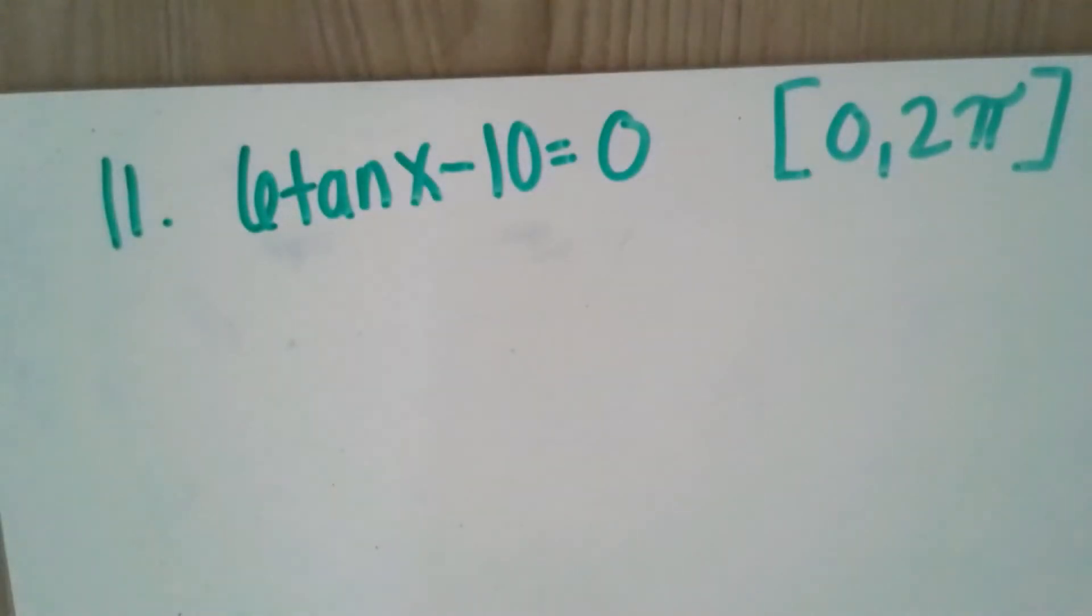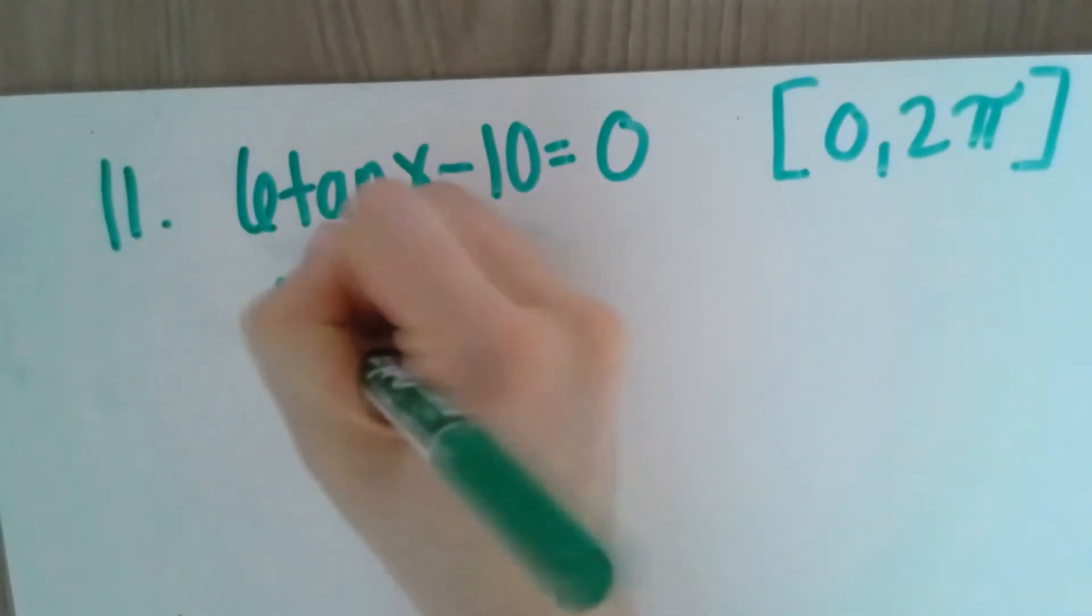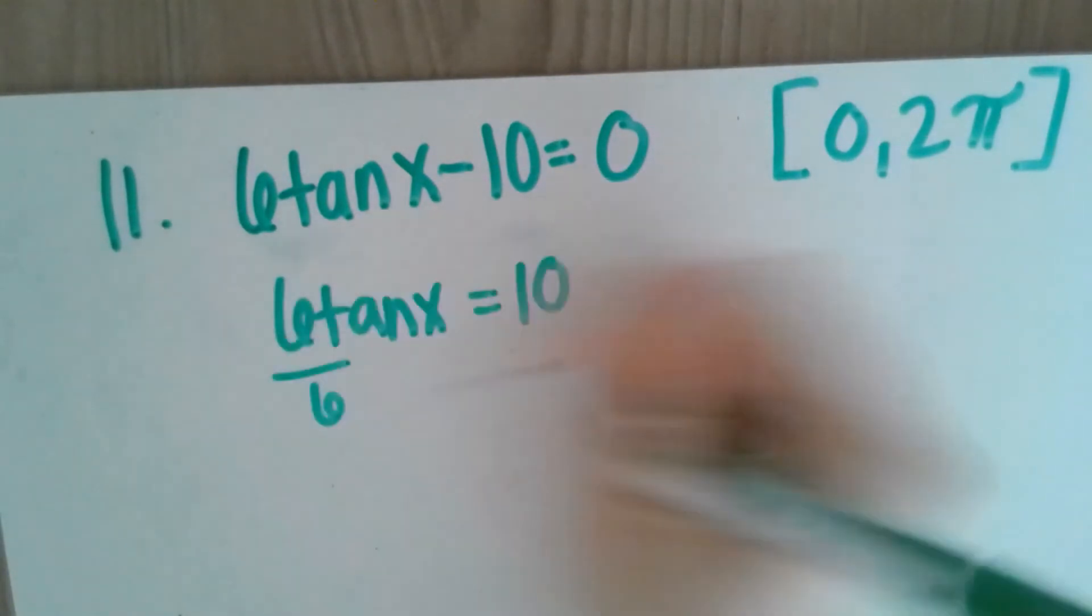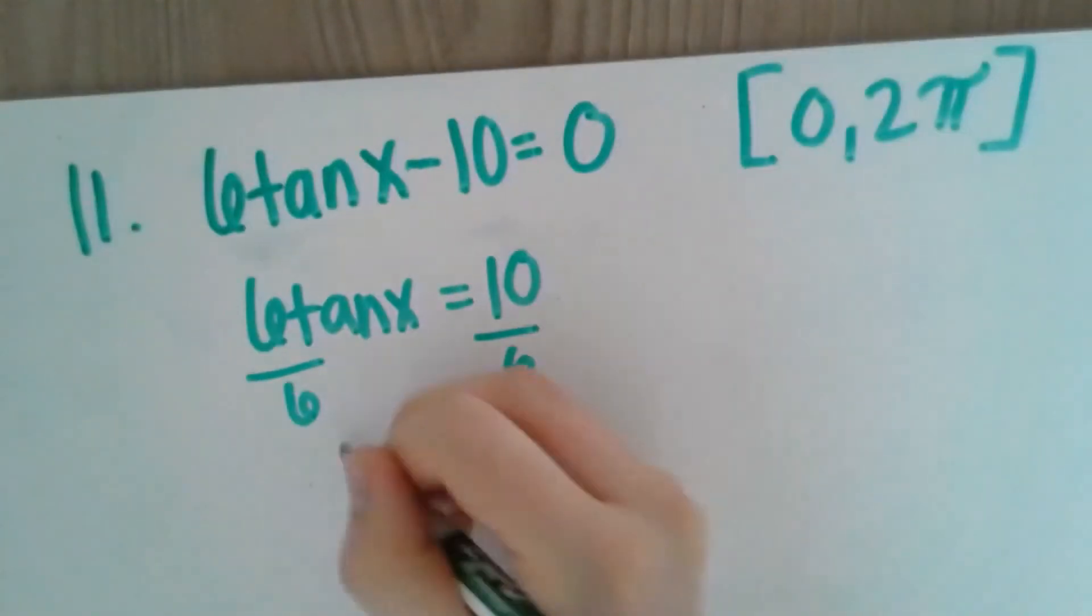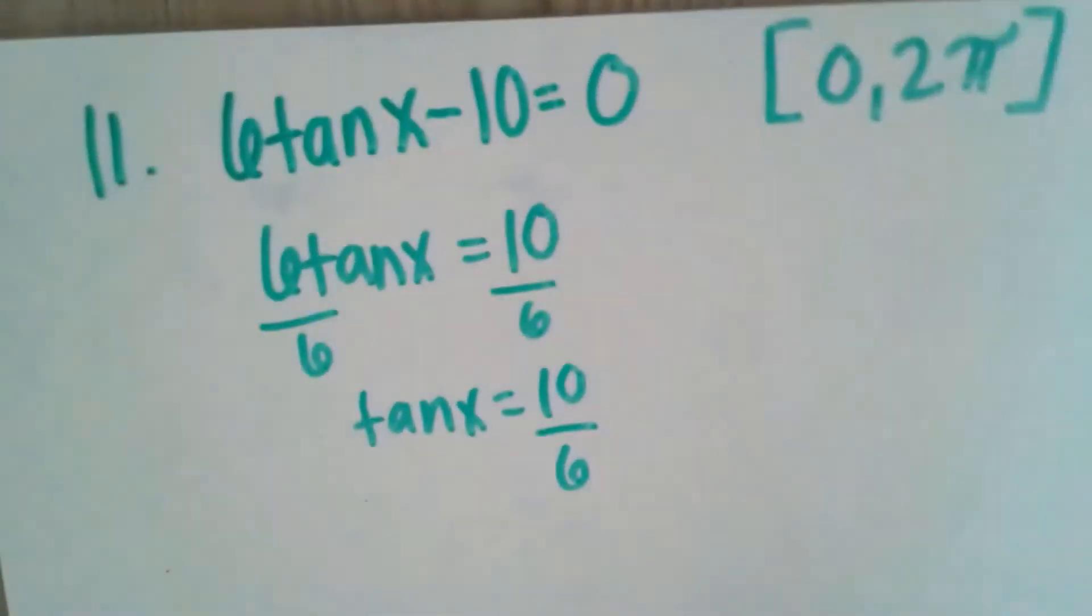Okay, so for problem 11, we've got this equation here, and our interval now is 0 to 2π. So add the 10 over, divide by 6, tan x equals 10/6.